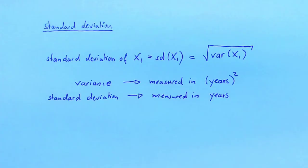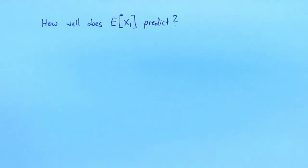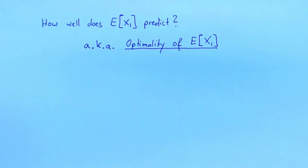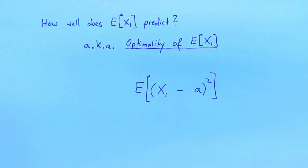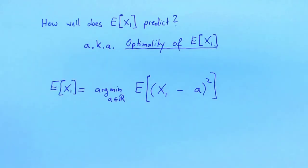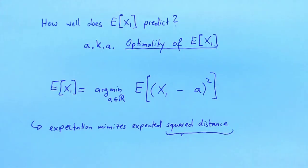We now understand how to use the variance to measure how well a random variable is predicted by its expectation. This puts us in a position where I can make my claim that the expectation is a good prediction a little more precise. Not only is the expectation a good prediction — it is actually in a way the best prediction. Suppose that today we are predicting a number a. a could be equal to the expectation of x1 or it could be any other number. We take the squared difference between x and a, and to remove randomness, we take the expectation. Values of a that make this expectation small are better predictions. It turns out the optimal a to choose is exactly the expectation. The expectation is an optimal prediction in the sense that it minimizes the expected squared distance, also called the squared loss.